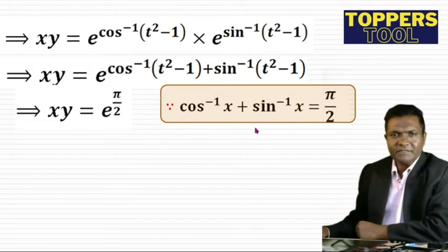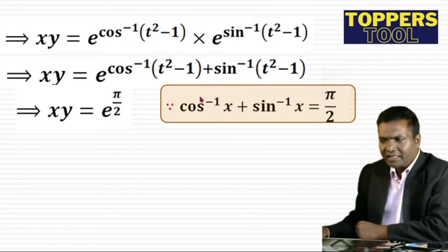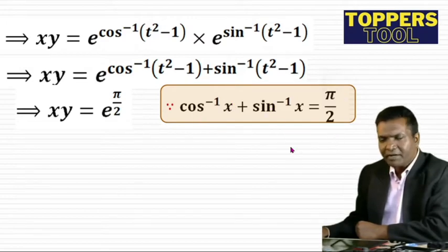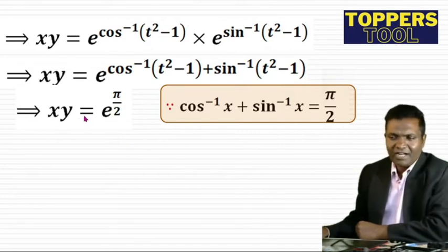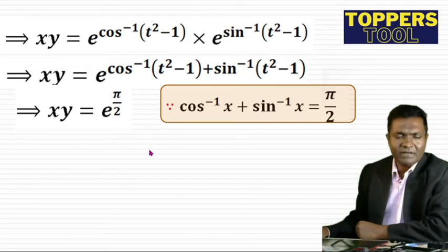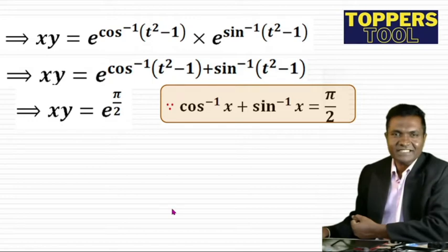Because cos⁻¹(x) + sin⁻¹(x) is always π/2. Similarly, tan⁻¹(x) + cot⁻¹(x) = π/2, and sec⁻¹(x) + cosec⁻¹(x) = π/2. So xy = e^(π/2), which is a constant. Now differentiate and check your answer.